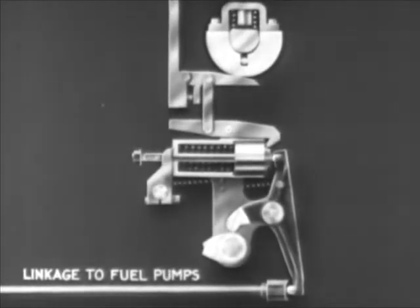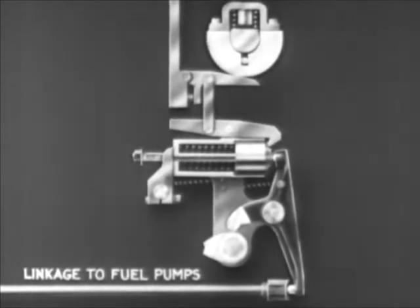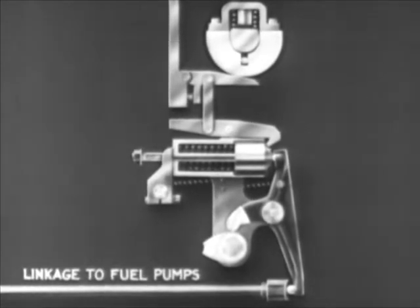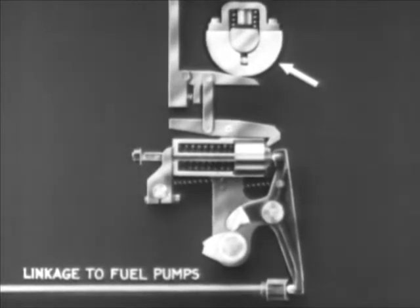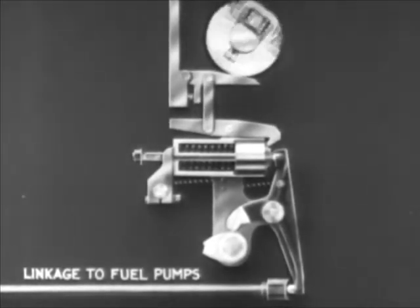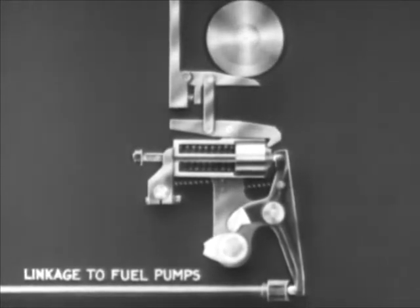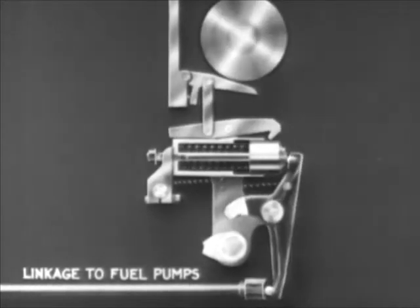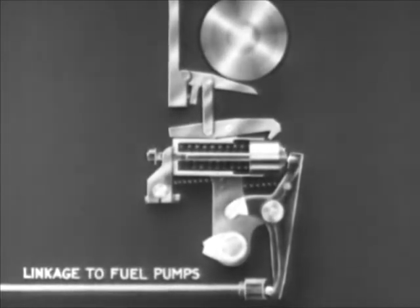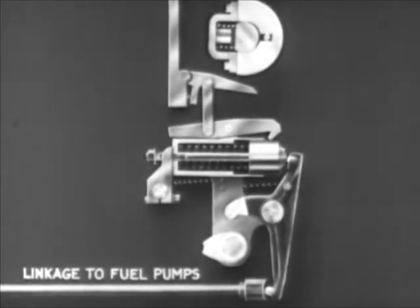One design of overspeed governor, called the overspeed trip, is sometimes used to stop the engine completely when a safe speed is exceeded. This type of overspeed trip has only one flyweight, also working on the principle of centrifugal force. While the engine operates at a safe speed, the rotating flyweight is held close to the driveshaft by a spring. As soon as the engine overspeeds, the flyweight moves outward and trips a latch. This causes the fuel supply to the injection valves to be shut off, and the engine stops.